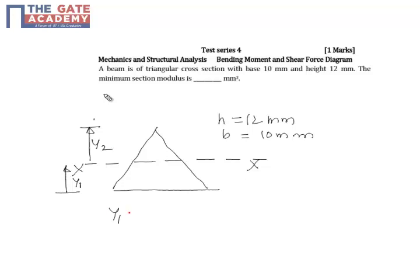y1 can be found out as it is 2/3 of the height of the beam, so the beam is 12, it comes out as 8 mm. And y2 is 1/3 the height of the beam, it is 4 mm.